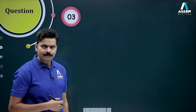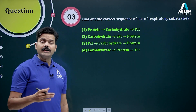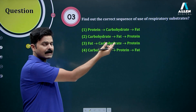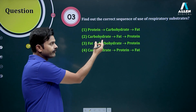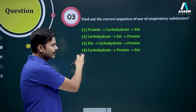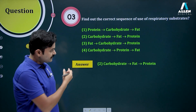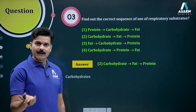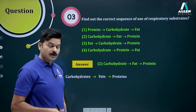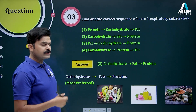Question number three: find out the correct sequence of use of respiratory substrates. Is it (1) protein, then carbohydrate, then fat? (2) carbohydrate, then fat, then protein? (3) fat, then carbohydrate, then protein? Or (4) carbohydrate, then protein, then fat? The answer is option number two — carbohydrate, then fat, then protein. The most preferred is carbohydrate, next comes fat, and the least preferred is protein.